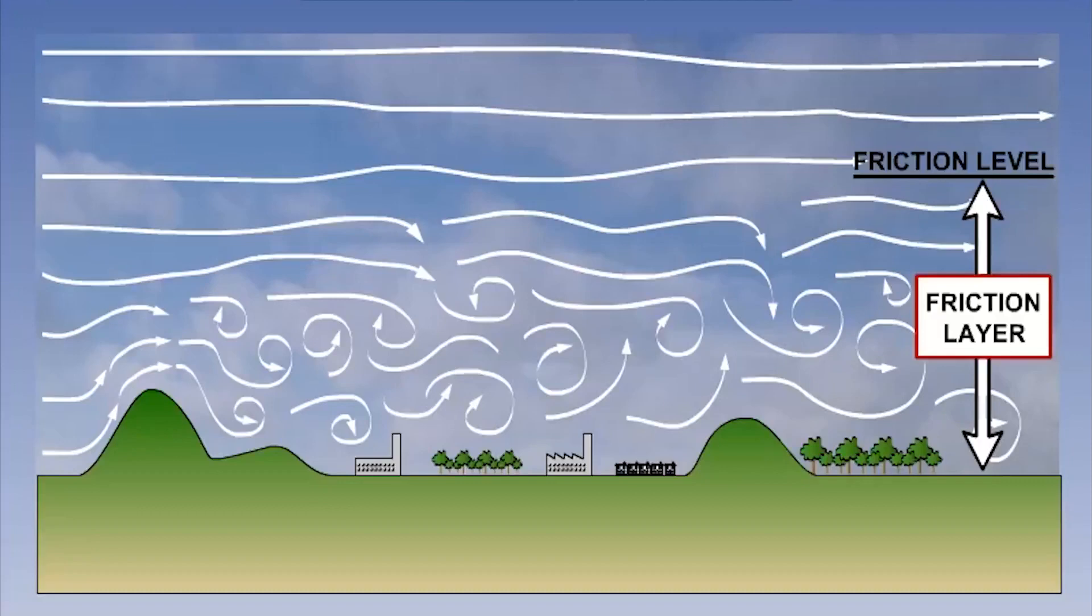This disturbed air near the surface is created in two ways: mechanically, by objects like trees, hills and buildings, and thermally, through the effect of warm air rising. We call these effects mechanical or thermal turbulence, respectively.